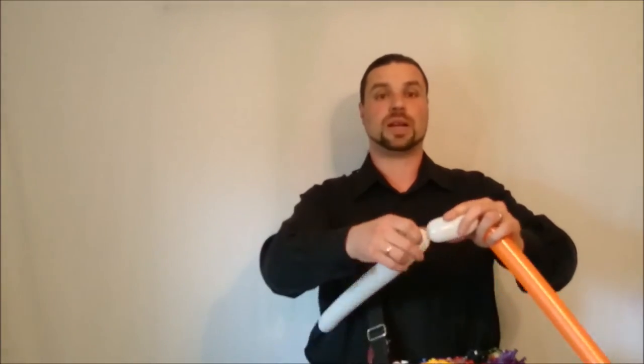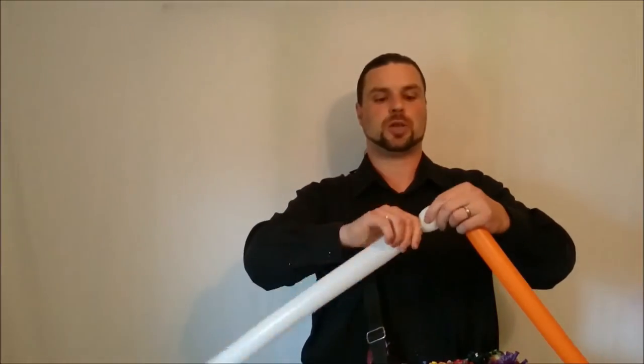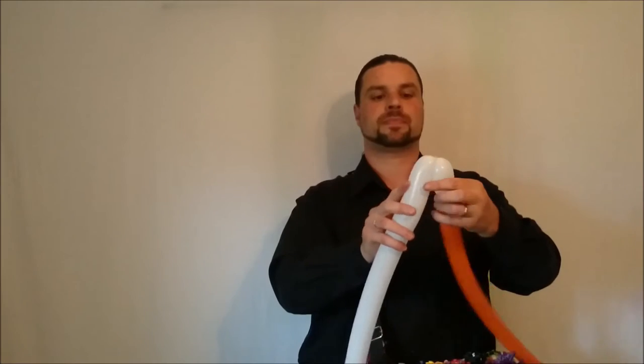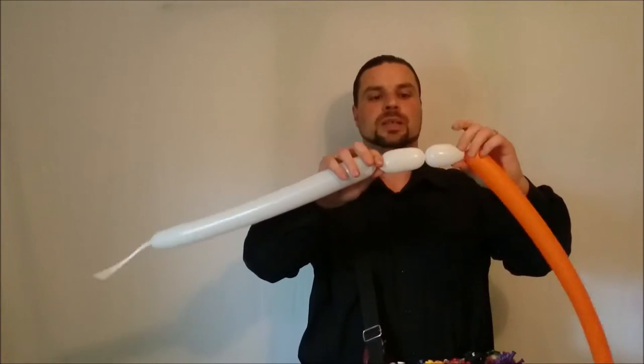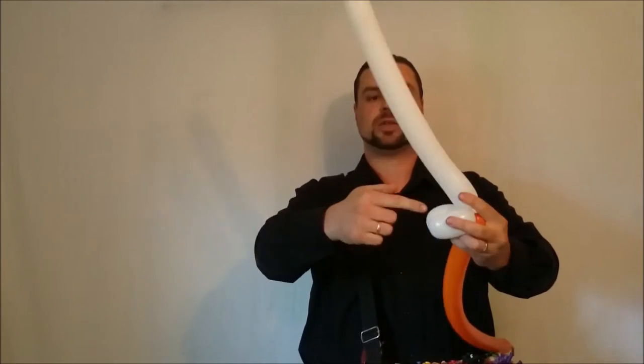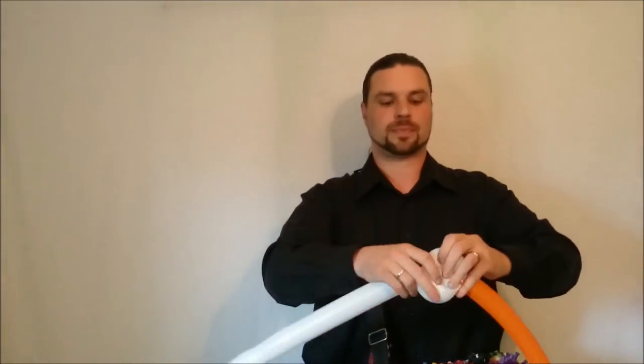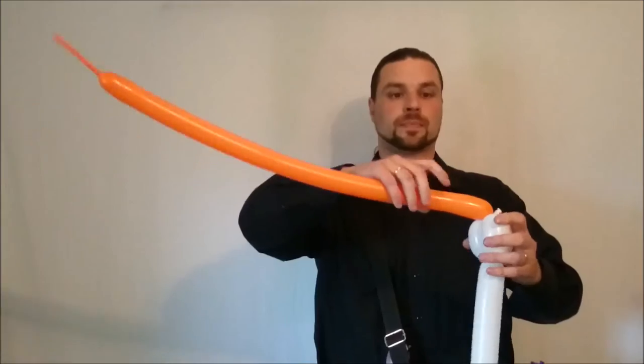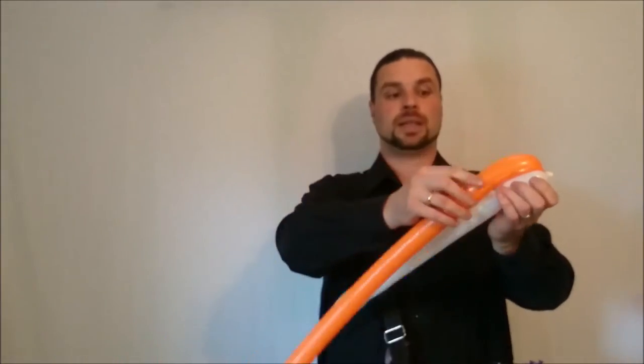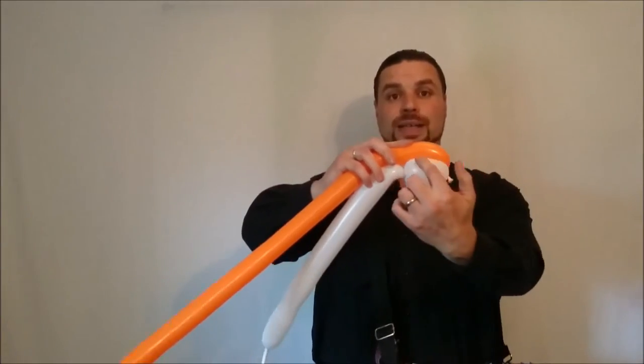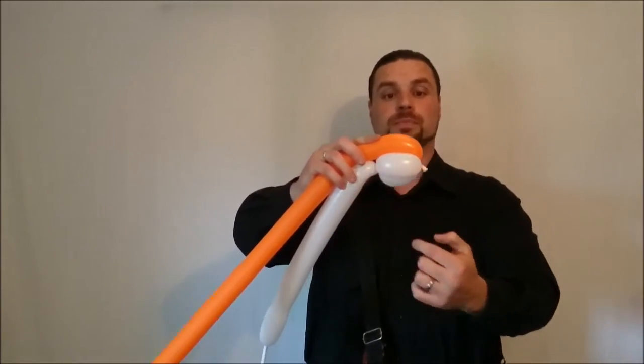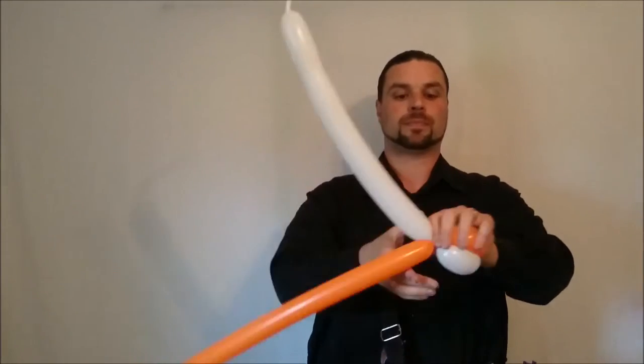Make the muzzle, however big you want it. Not too big. Maybe like three or four inches long each. Twist them together. Make a third one about the same size and roll it through. Take the orange and lay it across like that and lock it in here. Take the nozzle that's sticking out here and tuck it inside so it's hidden.